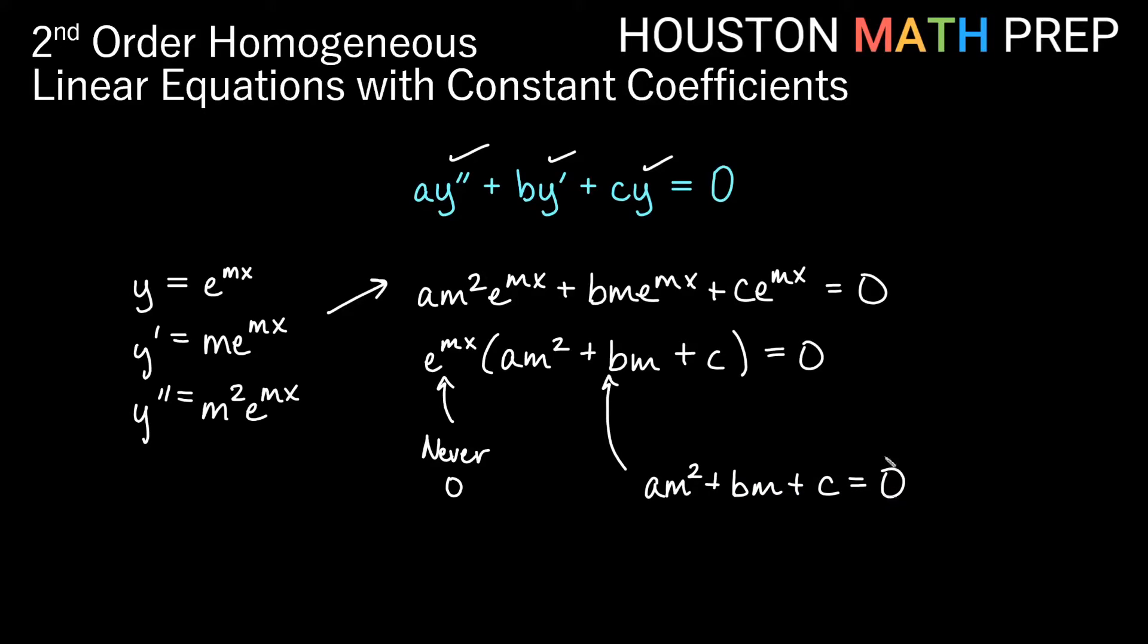So here's what that says. That says we can take the second order equation with constant coefficients in front of each of the y terms, y, y prime, y double prime. We can think of this as a quadratic equation algebraically, just in terms of m. Solve this easy algebra equation here. And then once we get solutions for m, we know that exponentials e to the mx are going to be solutions. And this algebraic equation that we solve right here that helps us solve the second order differential equation, this is actually called the characteristic polynomial for our differential equation.